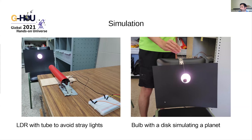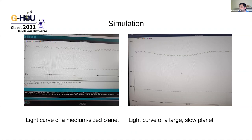We can compare a medium-sized planet on the left with a large planet on the right — you can see the deeper light dip produced by the larger planet. We can clearly see the difference in the light curves.